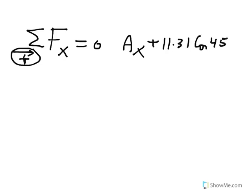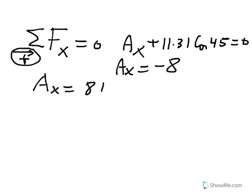So actually, if you don't do too much rounding off, this should become a negative 8, which means we were wrong about the direction of AX. So AX is 8 kilonewton, but it's pointing to the left.